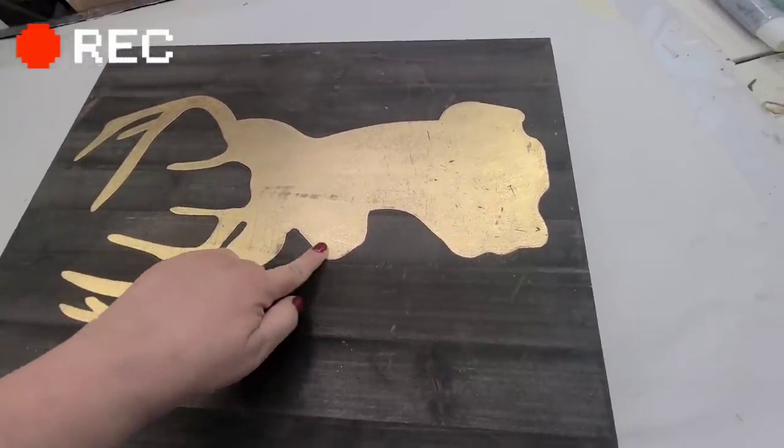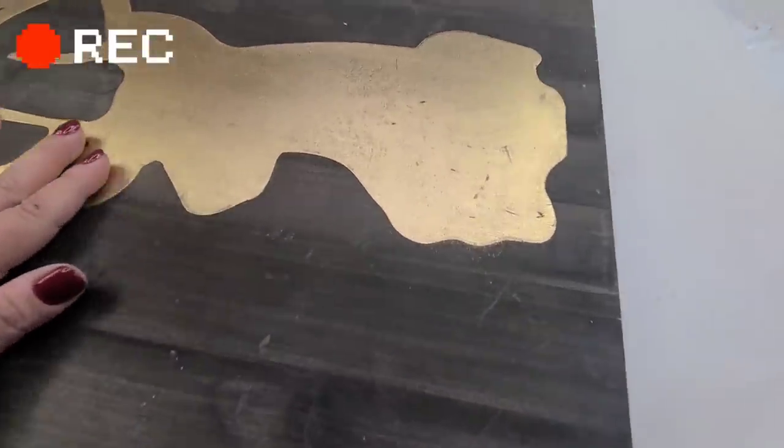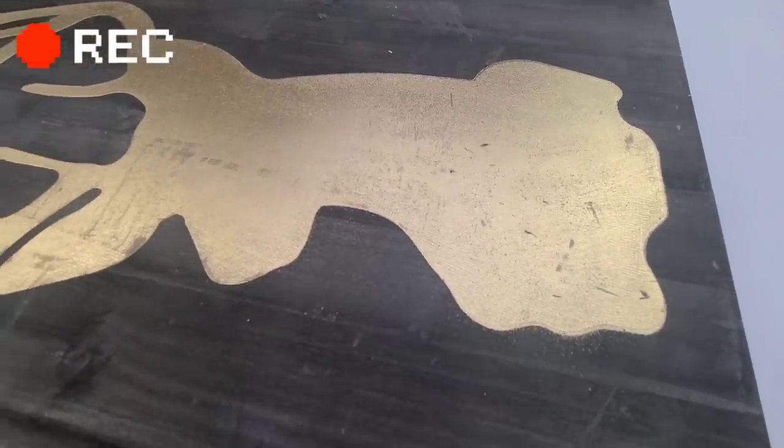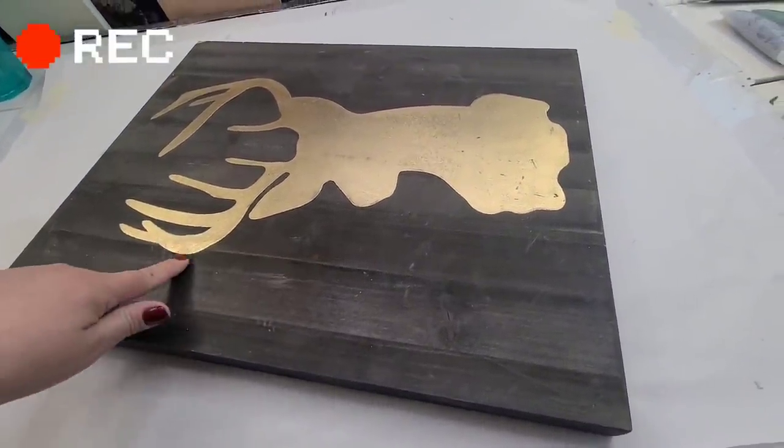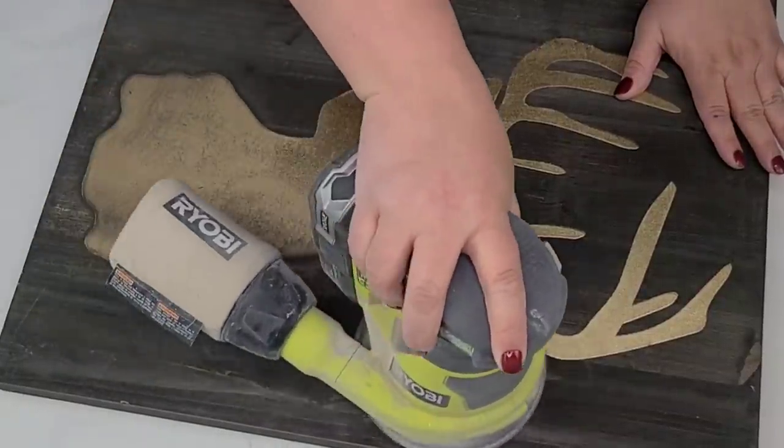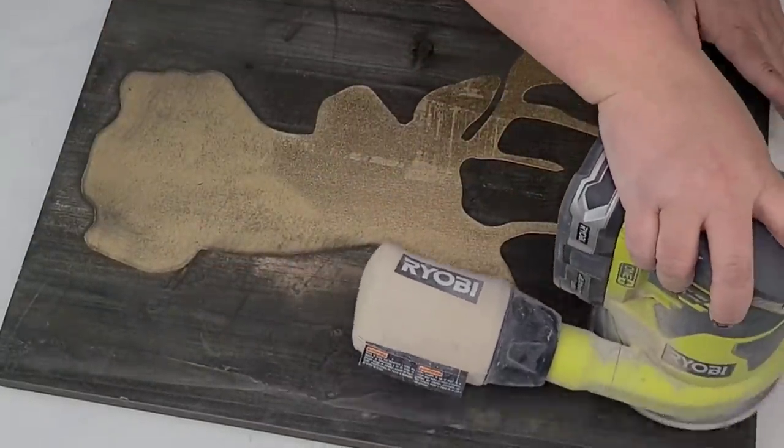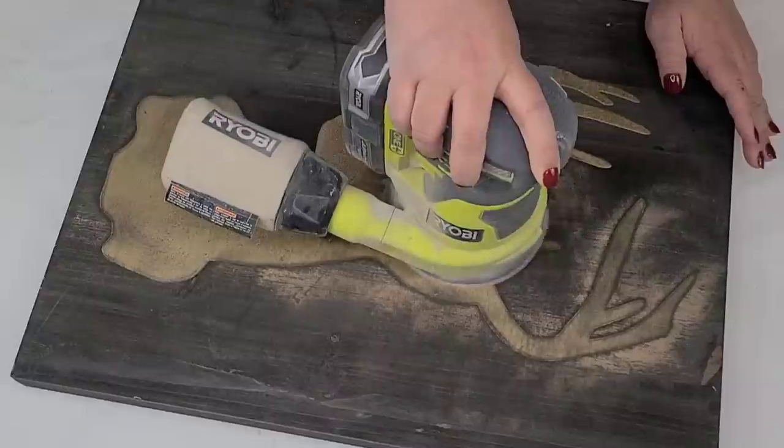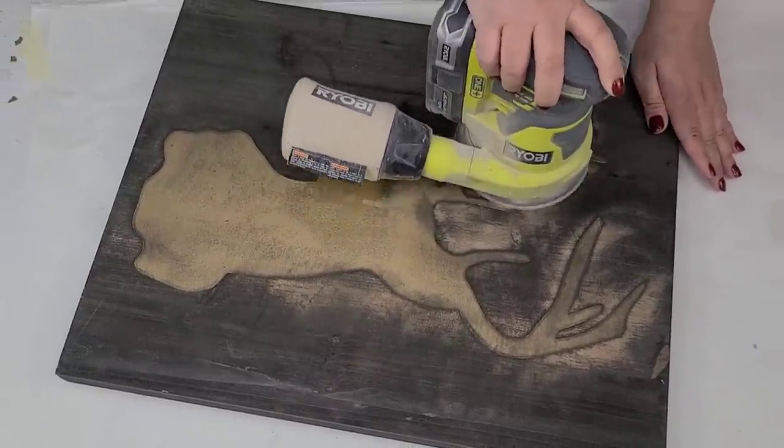I'm going to try to sand it down smooth and then start painting it. And hopefully you don't see those lines. I am using a palm sander and a 150 grit sandpaper to smooth it as far as I can down. And then I'm going to wipe it really, really well. Make sure there's no remaining dust on the board. And then I'm going to give it two coats of Rust-Oleum Chalk Paint in the Linen White.